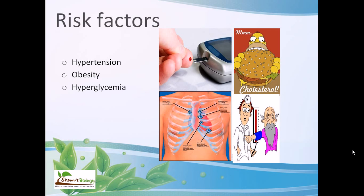Hyperglycemia is another risk factor. If you have angina or any kind of angina symptoms in your history, you should constantly check your blood glucose level, because higher glucose levels can create additional problems. Hyperlipidemia is another risk factor — if you have more lipids present in your blood, that can also cause problems, as it can lead to further vessel contraction and blockage.